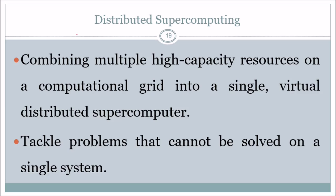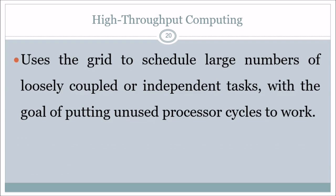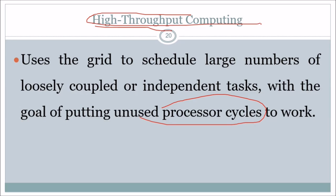Distributed supercomputing combines multiple high-capacity resources on a computational grid into a single virtual distributed supercomputer, tackling problems that cannot be solved on a single system. High throughput computing uses the grid to schedule a large number of loosely coupled and independent tasks with the goal of putting unused processor cycles to work. When high throughput is required, this type of computing is generally used.